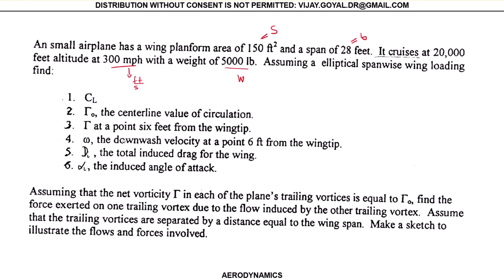Now you want the downwash velocity. To find your downwash velocity is very easy: the equation for downwash velocity is minus gamma zero over 2b. That gives you minus 407 over 2 times 28, which equals -7.27 feet per second.